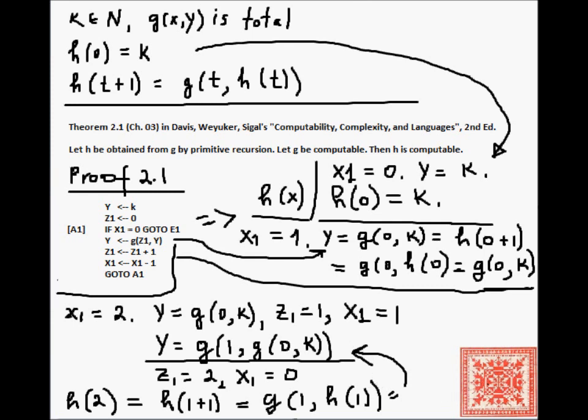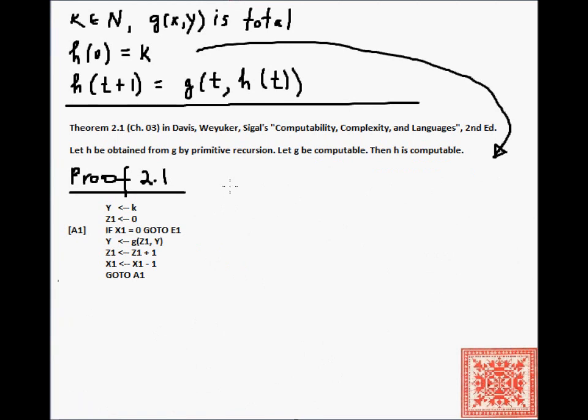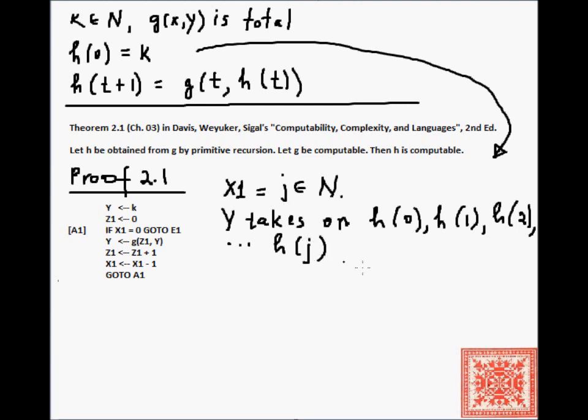We can generalize these observations. In general, if x1 is equal to j, some natural number j greater than 2, because we considered x1 equals 0, 1, and 2, then y will successively take on the values of h at each iteration: h of 0, h of 1, h of 2, all the way up to h of j, where j is greater than 2.